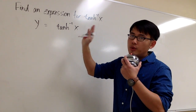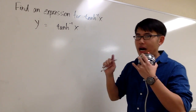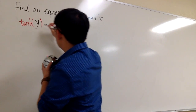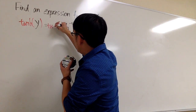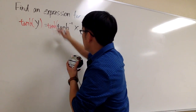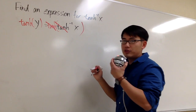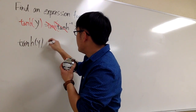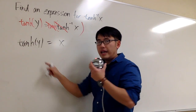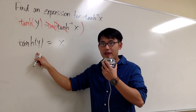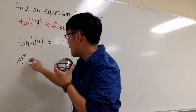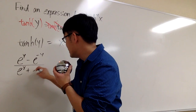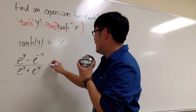This way, we can apply the original hyperbolic tangent to both sides. The original and inverse cancel each other out, so we're looking at tanh(y) equals x. Now I can use the definition of tanh(y): it's e to the y minus e to the negative y, all over e to the y plus e to the negative y, equals x.